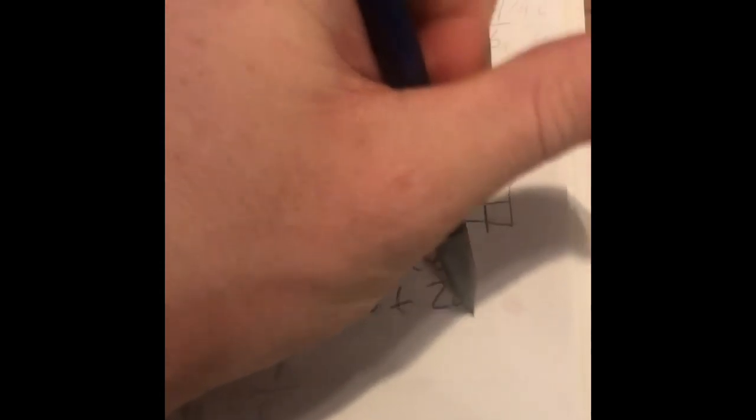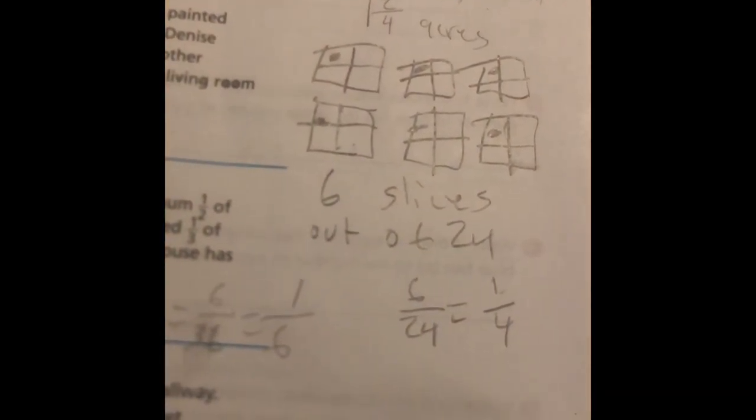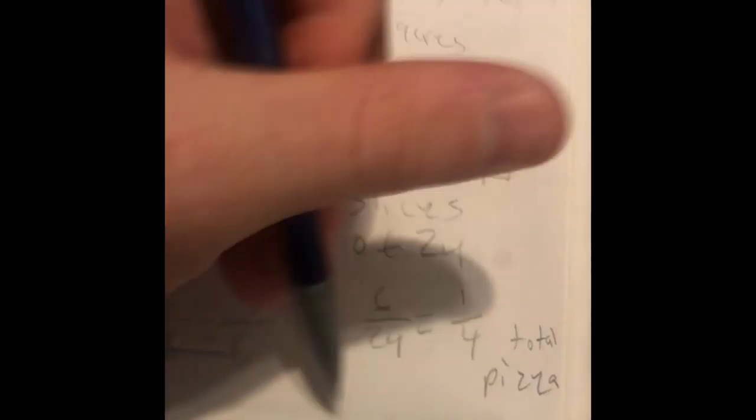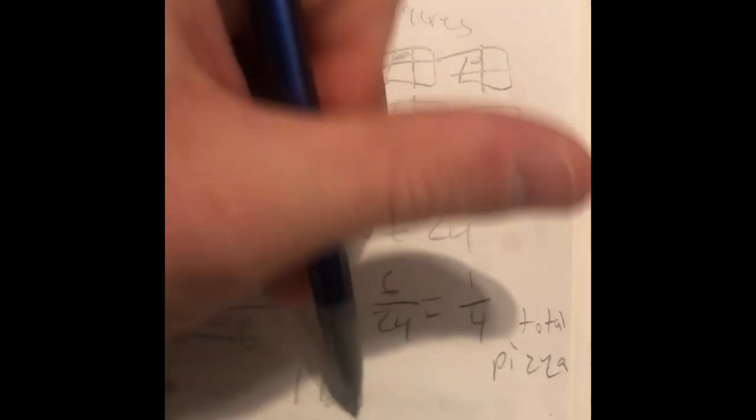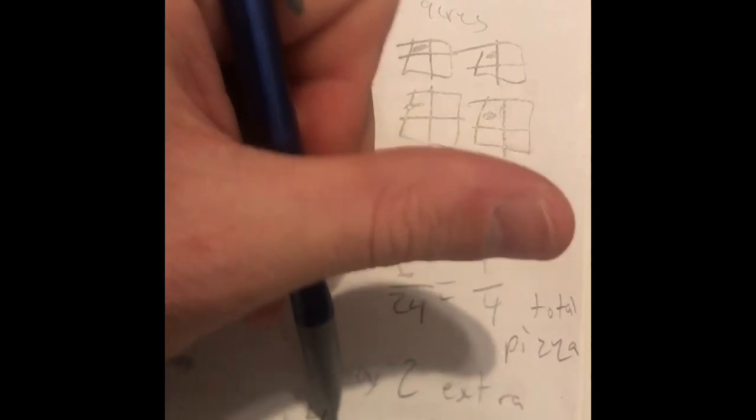Six slices out of four, eight, 12, 16, 20, 24 total, which comes to six over 24, which if we simplify that is one-fourth of the total pizza or one whole box and two extra slices, which would be one and two-fourths.